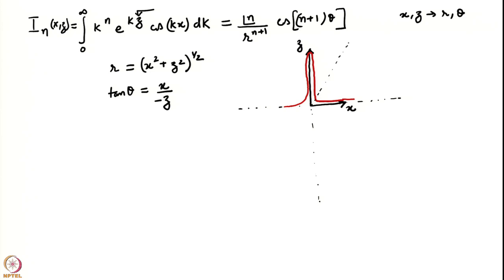Our polar coordinates are defined such that theta is the angle shown. Pay attention: this is not the usual way we define polar coordinates. Usually theta is defined with respect to the horizontal axis, but here we define it with respect to the vertical axis. For any point with negative z, minus z makes it positive. The corresponding mirror image of that point has tan(theta) = x / (minus z), so this coordinate is minus z.